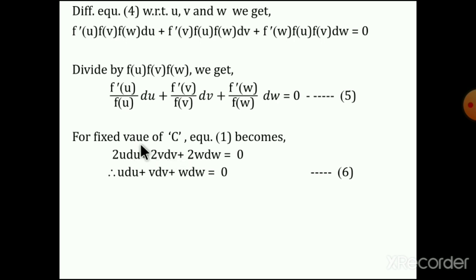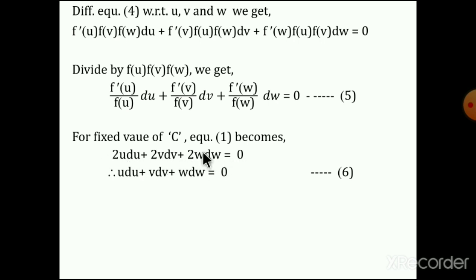We use equation number 1: c² = u² + v² + w², mentioned earlier. We differentiate this with respect to u, v, w. The derivative of c² is 0, so one side becomes 0. The other side gives: 2u·du + 2v·dv + 2w·dw = 0. Taking the common factor 2 out, we simply write: u·du + v·dv + w·dw = 0. This is equation number 6.